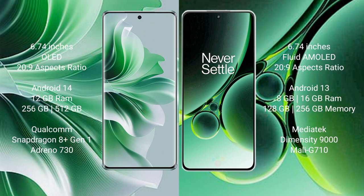OPPO Reno 11 Pro runs on the Android 14 operating system. OnePlus Nord 3 runs on the Android 13 operating system. OPPO Reno 11 Pro comes with 12GB RAM and